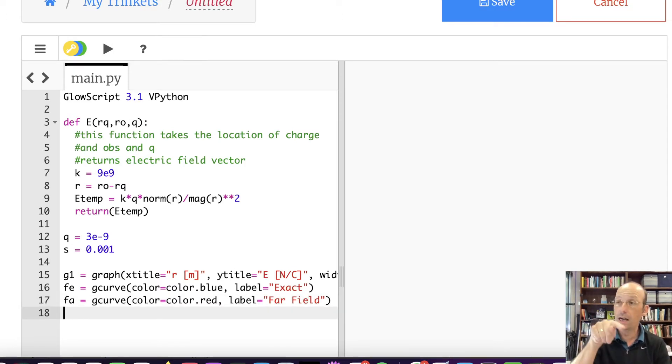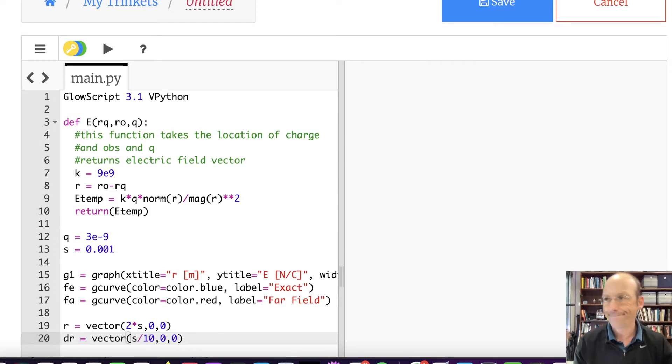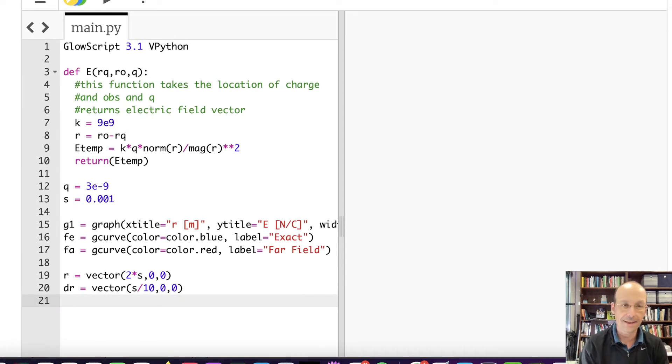So now I'm going to start at some location and calculate the electric field and start moving further and further away. Let's start with, I'm going to move along the X axis and I'm trying to decide if I want to call R vector. Yes, I think I am. So where should we start this? Let's start this at a distance of 2S. So R is going to be equal to the vector 2 times S, 0, 0. So that's pretty close, that's not a far field approximation. Now the next thing I need is how much of a jump am I going to do, how far am I going to move to my next data point. So let's say DR is going to be equal to vector S over 10, 0, 0. That might be a little small, but who cares, this is Python. It'll do whatever I ask it to do. What's it going to do, say no? It can't say no.